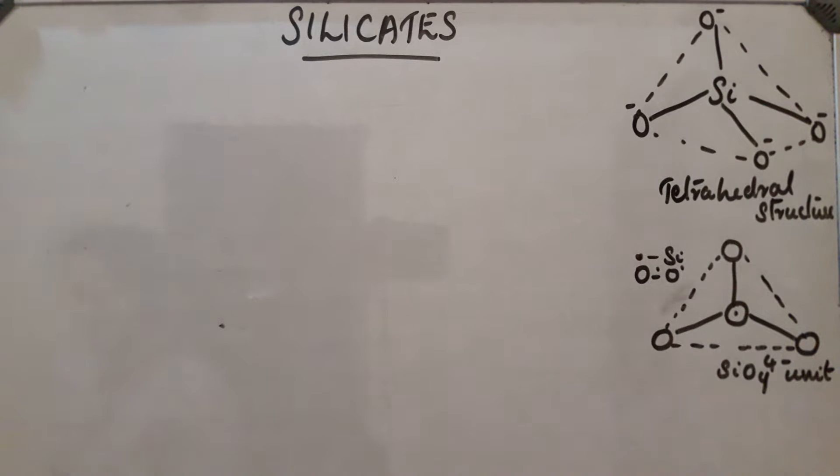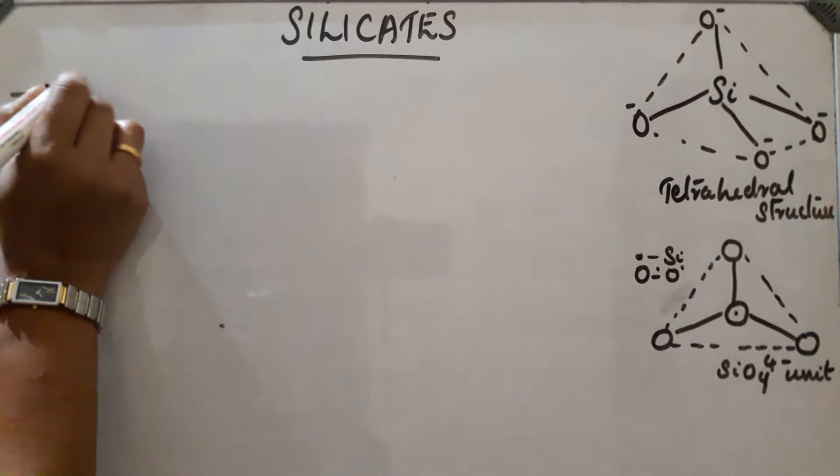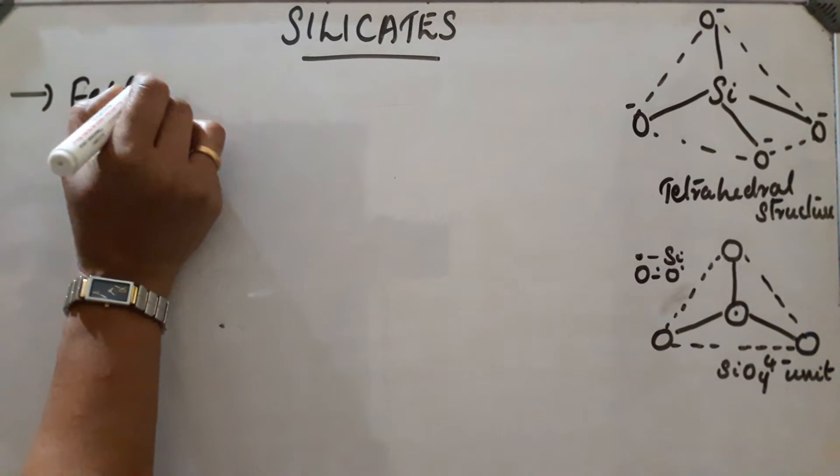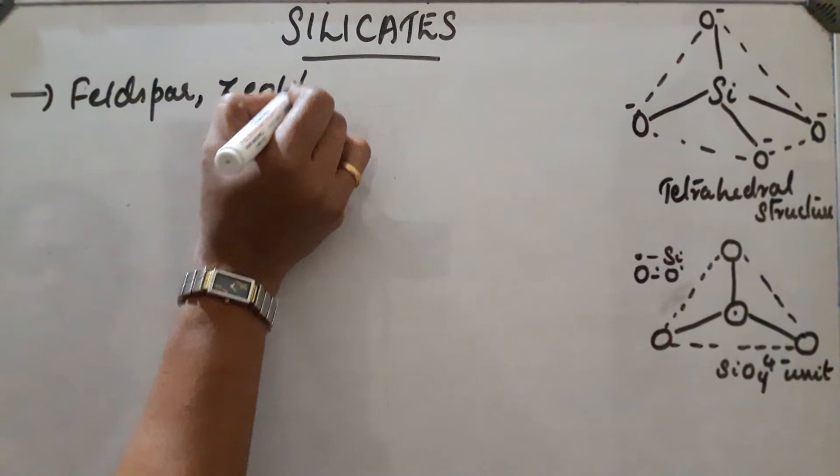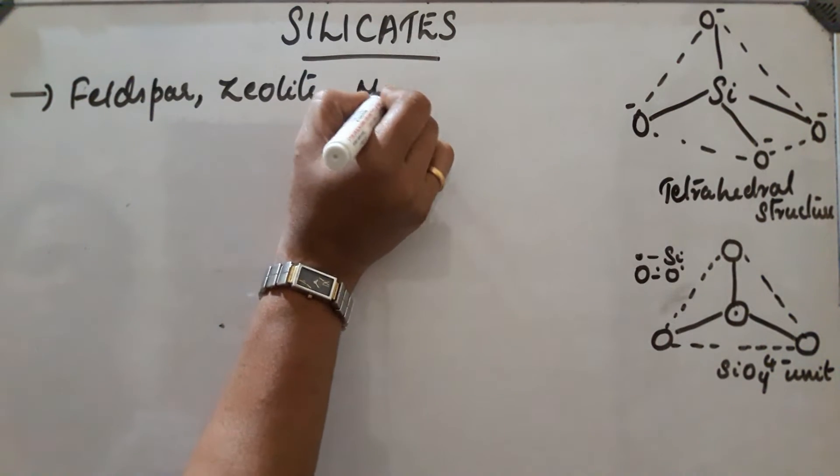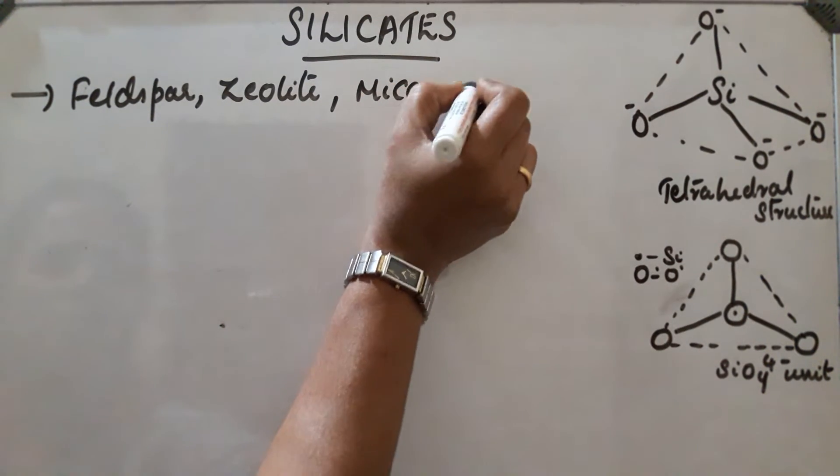Silicates. Large number of silicate minerals are present in universe. Some examples of silicates are feldspar, zeolites, mica, asbestos, etc.